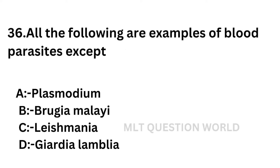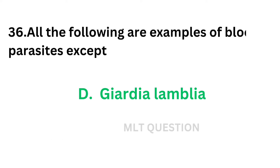Question number 36: All of the following are examples of blood parasites except — option A: Plasmodium, option B: Brugia malayi, option C: Leishmania, option D: Giardia lamblia. Plasmodium, Brugia malayi, and Leishmania are blood parasites, but Giardia lamblia is not. So the correct answer is option D, Giardia lamblia. Giardia lamblia is not a blood parasite; it is an intestinal flagellate.